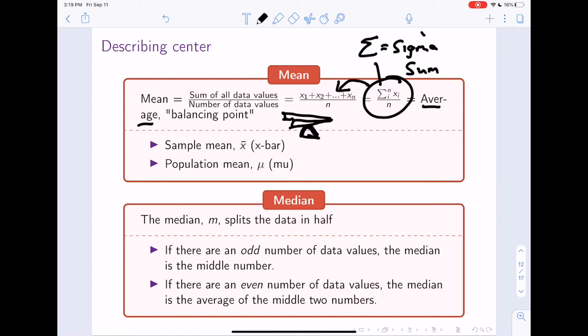It doesn't necessarily mean it's dividing the data in half because that's what the median does, but it's where the data is balanced. We represent the mean in the sample using this x-bar notation, and we represent the mean in the population using mu. Remember, x-bar is an estimate of mu. X-bar can vary from sample to sample. We talked about this last class.